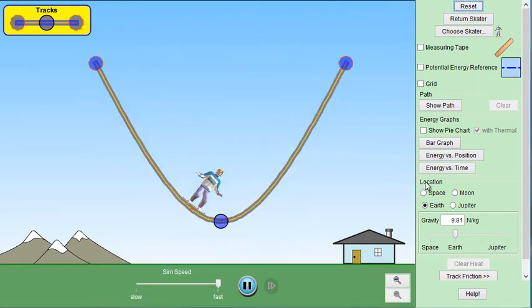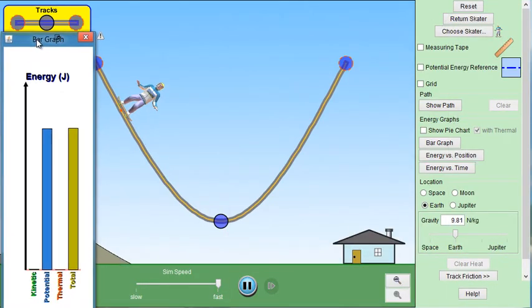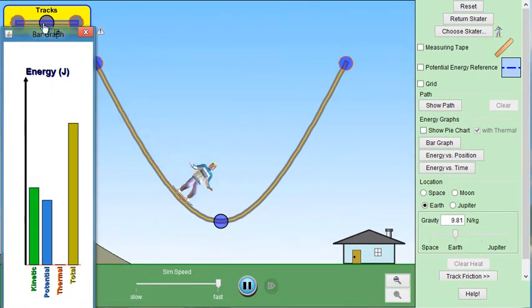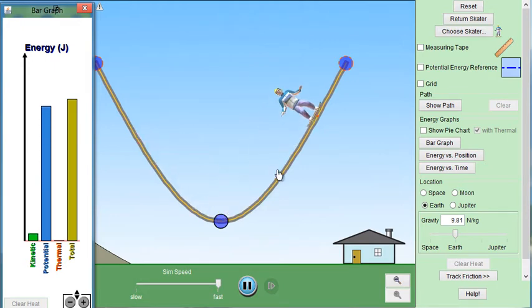There are some very useful graphs that you can open up. First is a bar graph. Notice how, as Ken goes back and forth, his kinetic energy in green reaches a peak at the bottom and it is zero at the top. Notice how his potential energy is greatest when he's at the top and least when he's at the bottom.